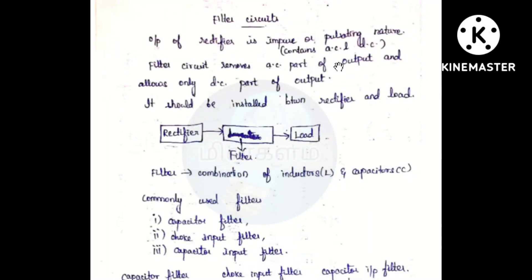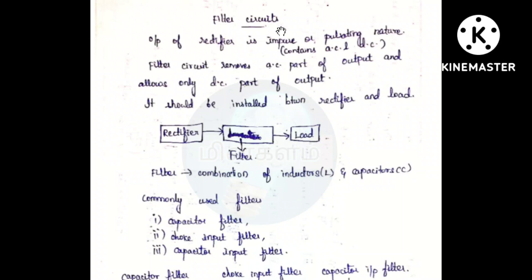Now, let's talk about filter circuits and how our rectifier works. If you want pure DC or a straight line, you can change a little bit. But now we have both AC and DC. That output is not pure DC — it's of a pulsating nature and impure DC. We have AC and DC content. Now, let's remove the AC content. If you want to use the DC part, you can use the filter circuits.